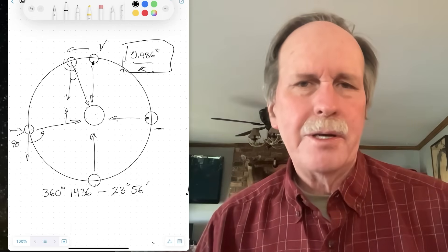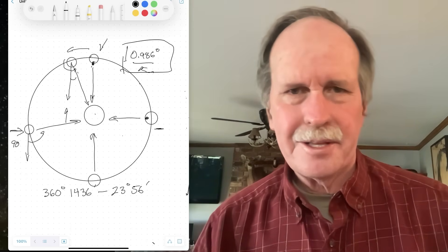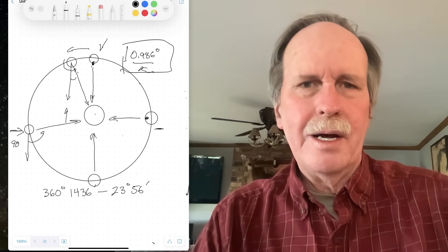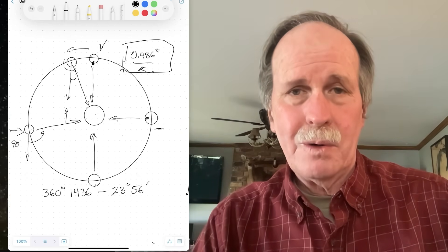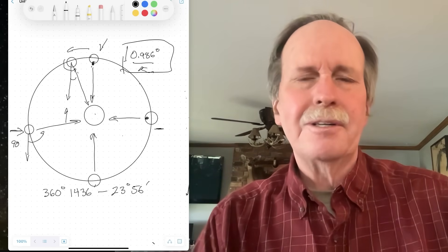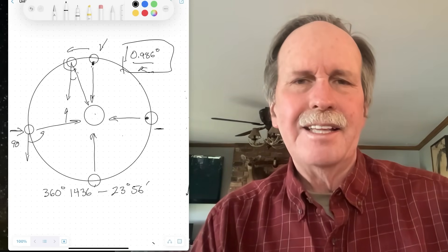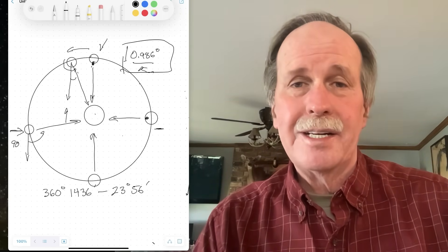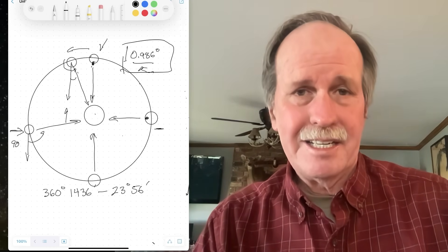So the next time you hear a flat Earther, like Angel of Light or one of those other guys, come out and say, well, it's impossible for the Earth to be in orbit because we would be pointing the wrong way for solar noon, chuckle a little bit to yourself, and then ask them what is the difference between solar tracking rate and sidereal tracking rate.